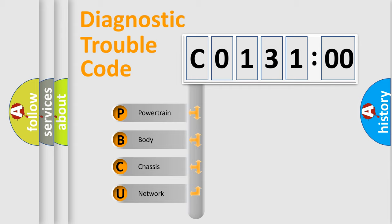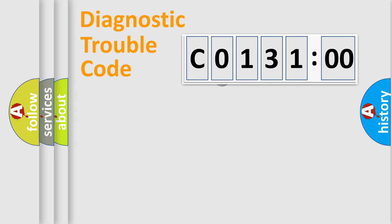We divide the electric system of automobile into the four basic units: Powertrain, Body, Chassis, and Network.